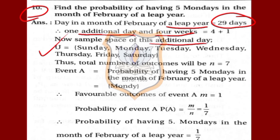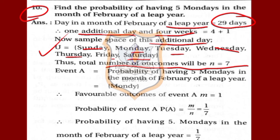The sample space for this additional day is U = {Sunday, Monday, Tuesday, Wednesday, Thursday, Friday, Saturday}. So the total number of outcomes N = 7. Event A is that the additional day is a Monday, so the number of favorable outcomes M = 1.